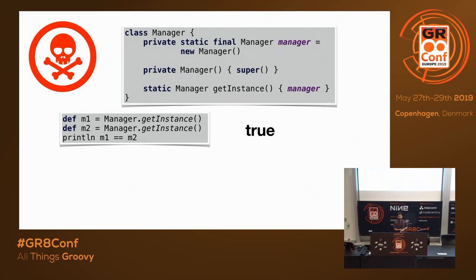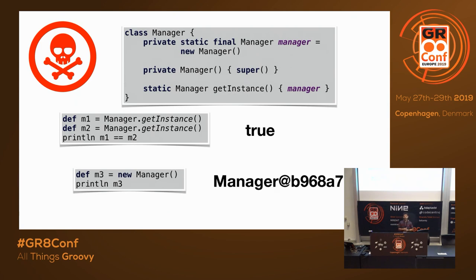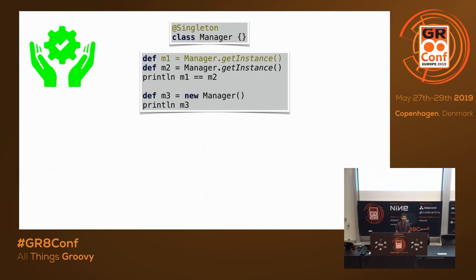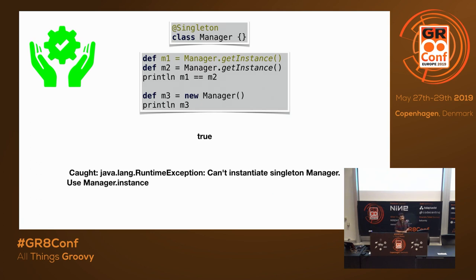However, when trying to call the constructor directly to create an object, it succeeds and returns a new object — even though we made the constructor private. Ideally it should not allow calling the constructor. You don't have to do all these things to implement Singleton in Groovy. All you have to do is use the AST transformation @Singleton. Calling getInstance() twice returns true, and trying to call the constructor throws an exception: 'Can't instantiate singleton — use Manager.instance or Manager.getInstance().'